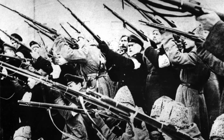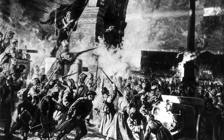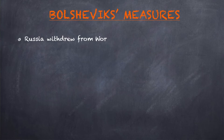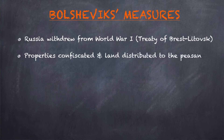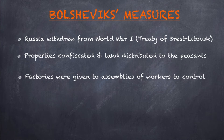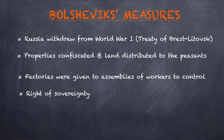The Bolsheviks, who controlled the Soviets, took over the city and formed a new government. Kerensky went into exile. The new government took very important measures: Russia withdrew from World War I after signing the Treaty of Brest-Litovsk; properties from the nobility were confiscated and land distributed to the peasants; factories were given to assemblies of workers to control; and the right of sovereignty was given to the different nationalities that existed in Russia.